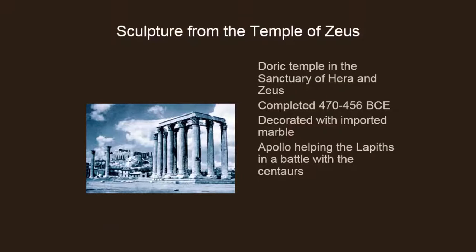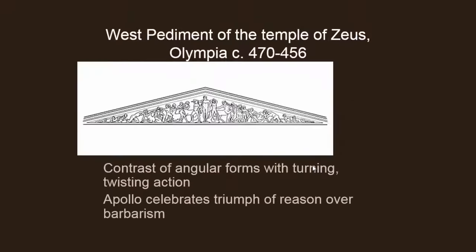This is a Doric temple in the sanctuary of Hera and Zeus, completed a little bit earlier. The temple is decorated with imported marble, but the sculptures appear to be from a slightly later period. We have images of Apollo helping the Lapiths in a battle with the centaurs. On the west pediment we have twisting, turning, writhing figures with Apollo in the center, celebrating the triumph of reason over barbarism — classic subject matter.